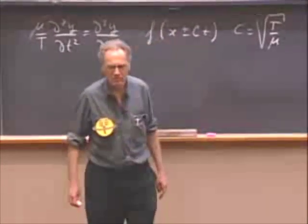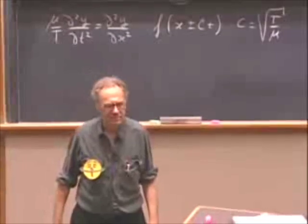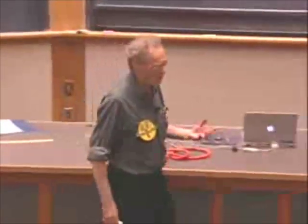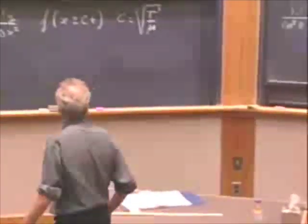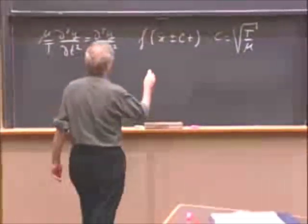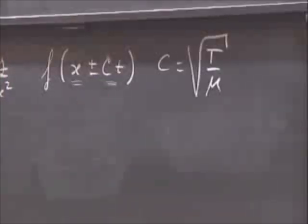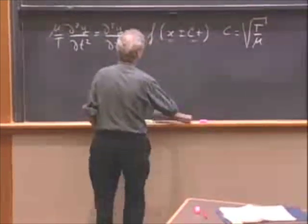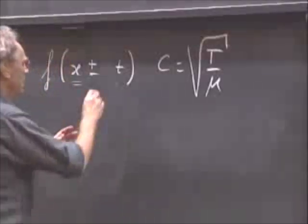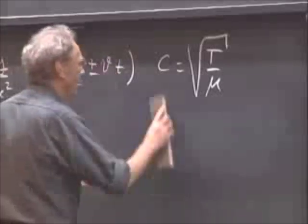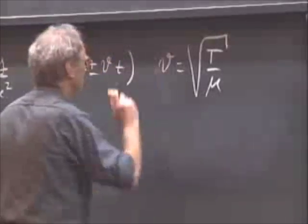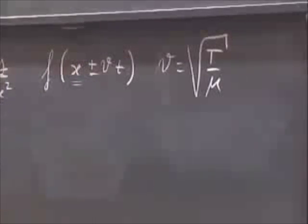What is the dimension of that c? Meters per second. It's a velocity. Because if I have apples here, I must also have apples there. And so this can only be an apple if c has the dimension of a velocity. So therefore, you might as well write this as plus or minus vt. And you might as well write v for here, a velocity.